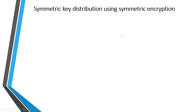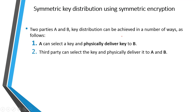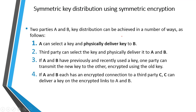Next is symmetric key distribution using symmetric encryption. Key distribution between parties A and B can be achieved in a number of ways. First, A can select the key and physically deliver it to B. Second, A and B can use a third party to select and physically deliver the key. Third, if A and B have previously used a key, one party can transmit the new key encrypted using the old key. Fourth, if A and B each have an encrypted connection to a third party C, that third party can deliver a key on an encrypted link to A and B.